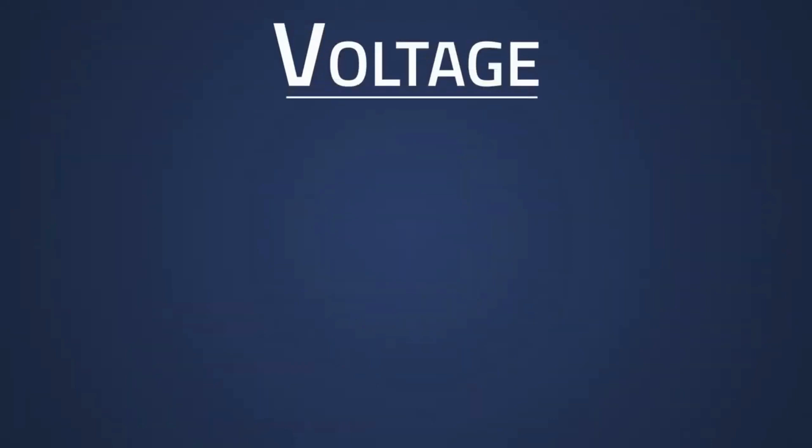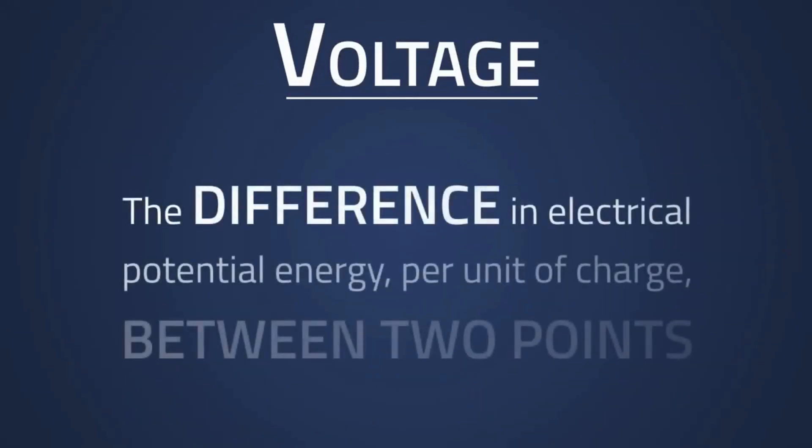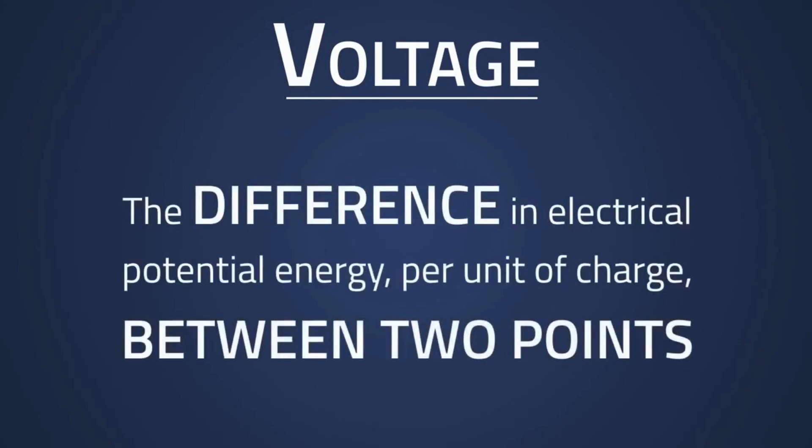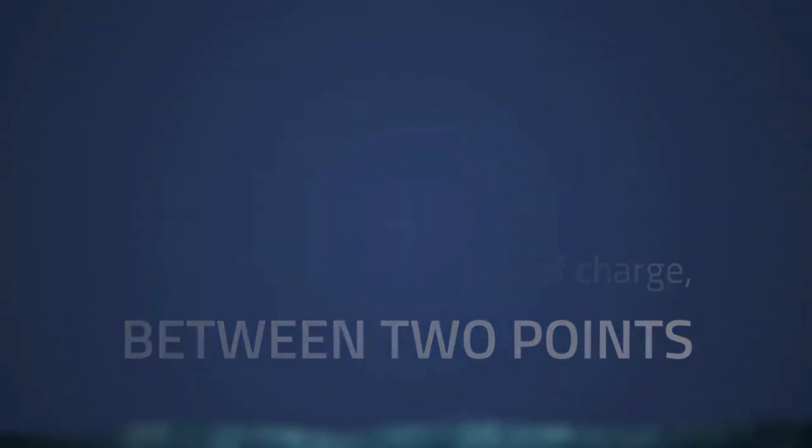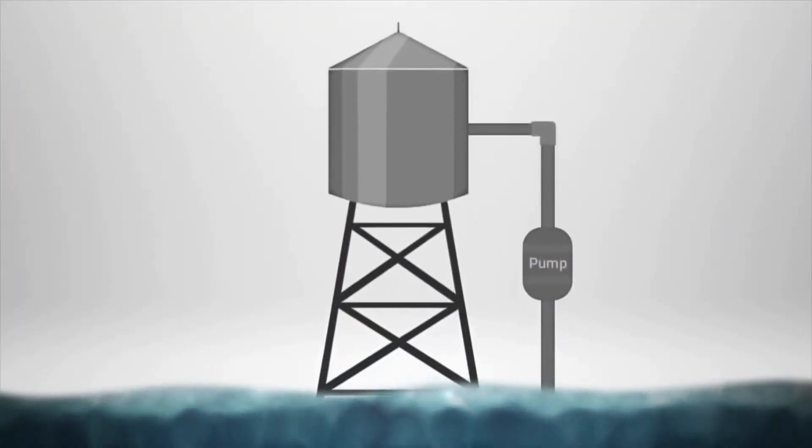Now in the original definition we also said that the voltage was the difference in electrical potential energy per unit of charge between two points. So back in the example, when we were talking about the potential energy, what we're really referencing is the force of gravity pulling the water from point A to point B.